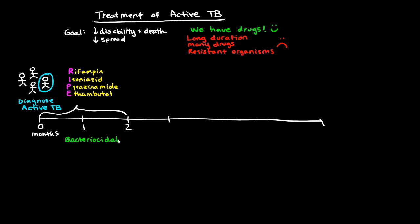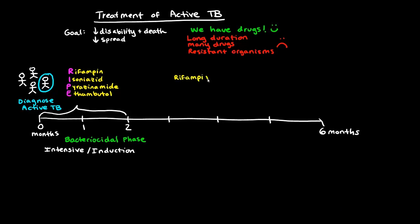We confirm that by doing cultures along the way. That intensive two-month phase is followed by a consolidation phase. If all goes well, we back off to just two drugs — rifampin and INH — for the ensuing four months. We can use fewer drugs because we've killed the bulk of the tuberculous organisms in that first two months, and now we're giving consolidated therapy.